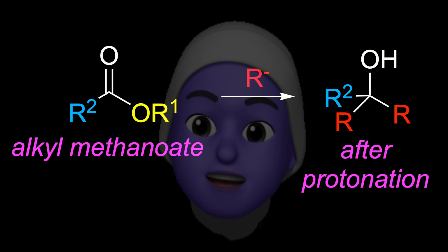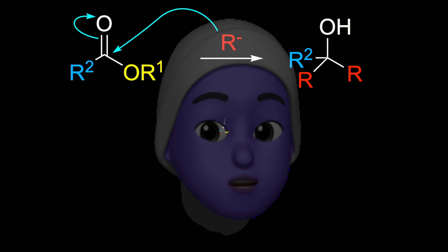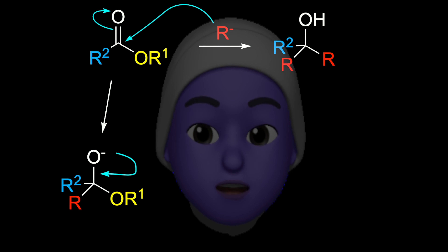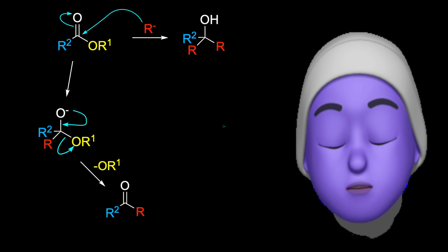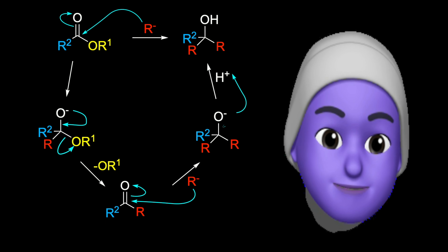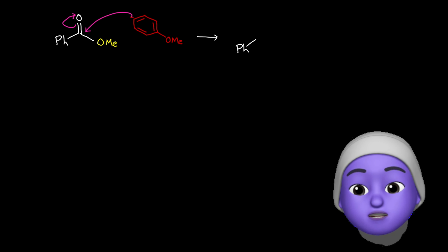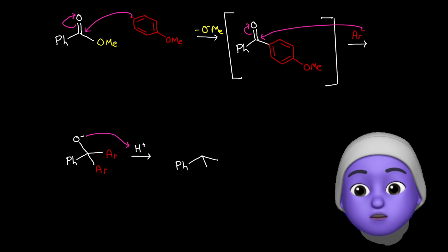Carbon ions adding to esters, except to methanoates, gives tertiary alcohols. Those products have one substituent from the ester and two identical ones from the R minus fragments. Here's an example for you — it illustrates how abbreviating fragments can simplify diagrams. Here the aryl, A-R, is for methoxybenzene. That's a general tip.